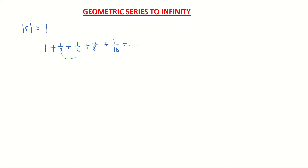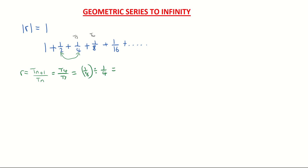To find the common ratio — how I'm going from one term to the next — we take any term in the sequence and divide it by the previous term. For instance, taking term 4 and dividing by term 3: that's (1/8) divided by (1/4), giving a common ratio of 1/2.